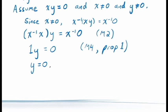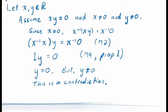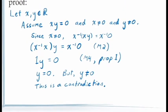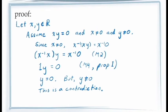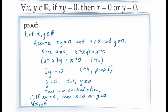Combining this with our assumption that y is not equal to 0 gives us our contradiction. Since we've reached a contradiction by assuming the negation of our conditional statement, we conclude that the full conditional statement must be true: if xy equals 0, then at least one of x or y must be 0. Since x and y were arbitrary, this holds for all values of x and y in the real numbers.